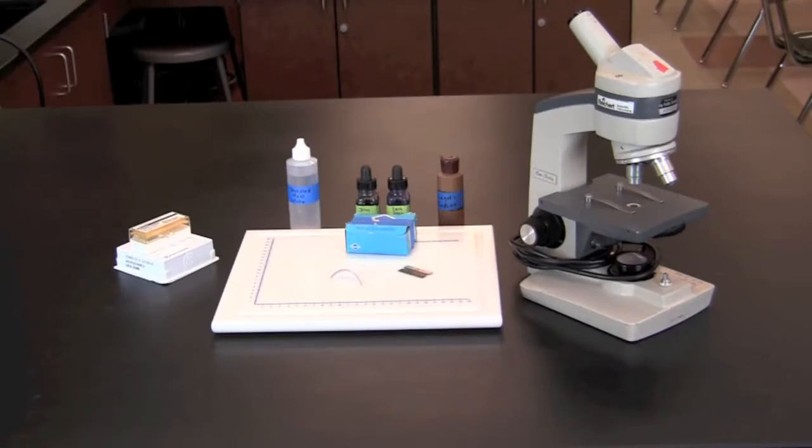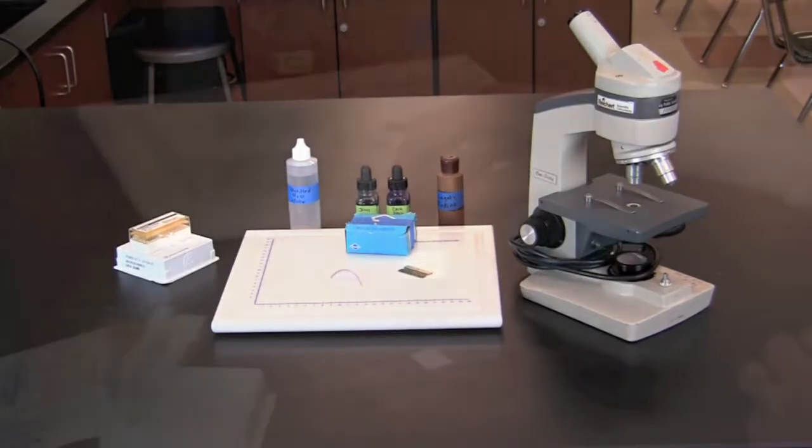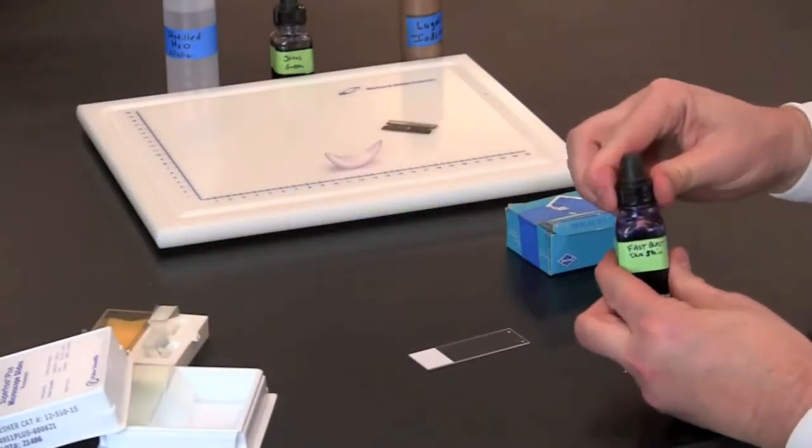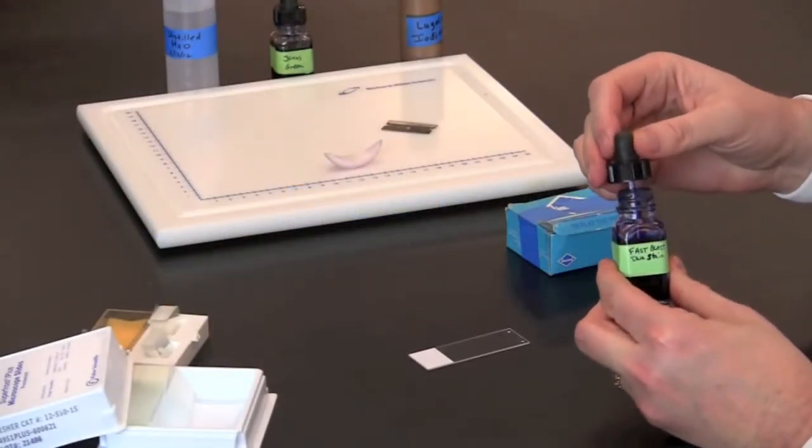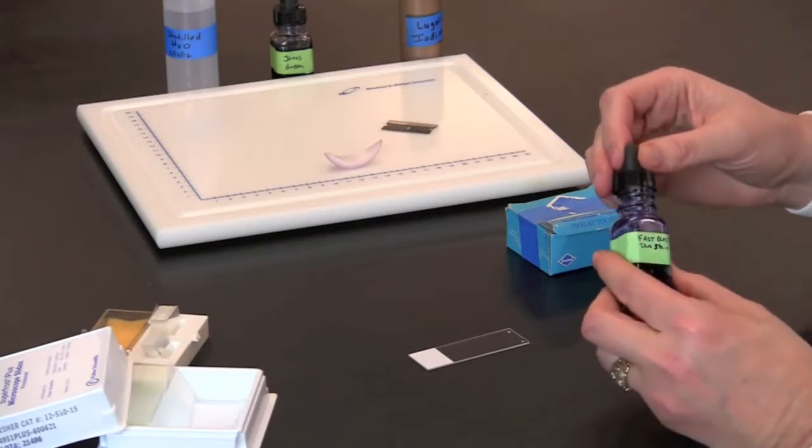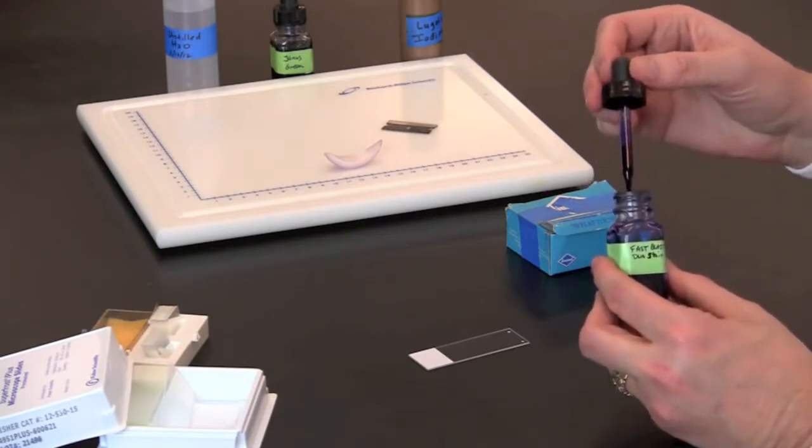In this video you will learn how to stain eukaryotic cells. To make a wet mount of cheek cells, place a drop of fast blast DNA stain on a microscope slide.